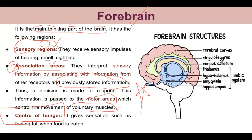The structure of the forebrain includes the corpus callosum. The inner part is called the limbic system. The outer layer is the thalamus, and inside that is the hypothalamus, the amygdala, and below that is the hippocampus. This is the forebrain structure.